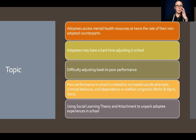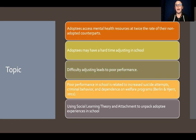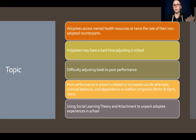Adoptees access mental health resources at twice the rate of their non-adopted counterparts, which motivated my research. Why do adoptees access these resources so much more often? Adoptees have a hard time adjusting in school because of trauma and relinquishment, and that difficulty adjusting often leads to poor performance. Poor performance in school is related to increased suicide attempts, criminal behavior, and dependence on welfare programs, according to Berlin and Hersch in 2011. Is it because of variables like schooling? I use social learning theory and attachment theory to unpack the adoptee experience.